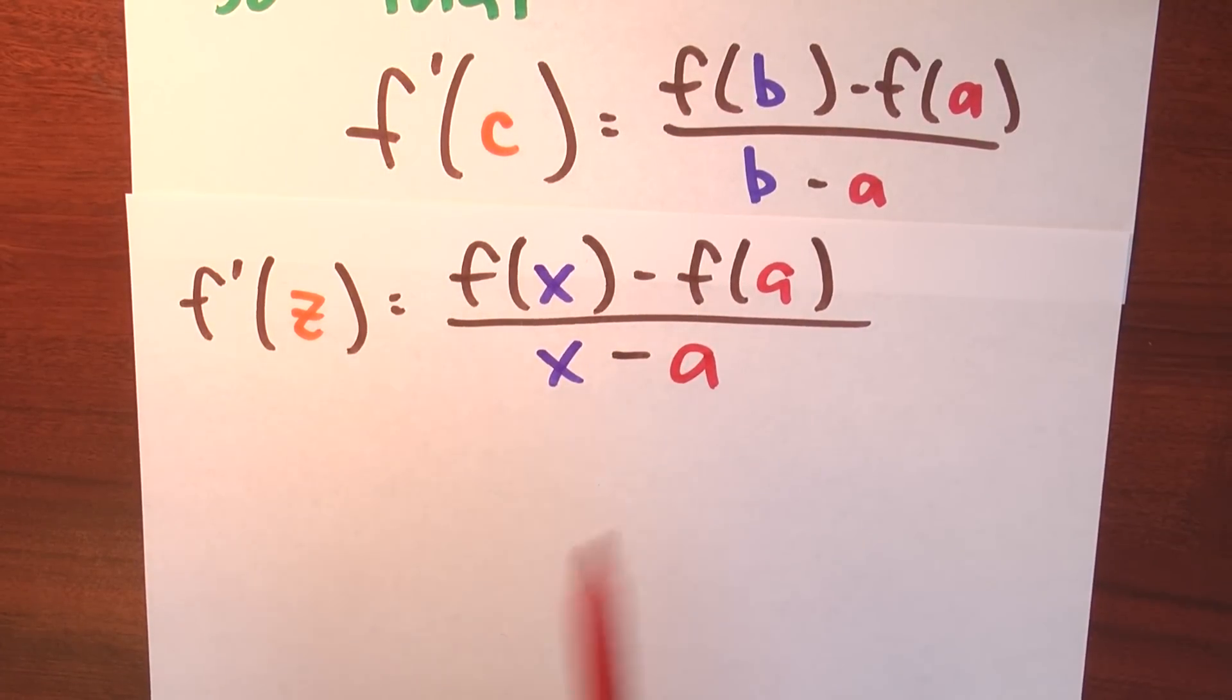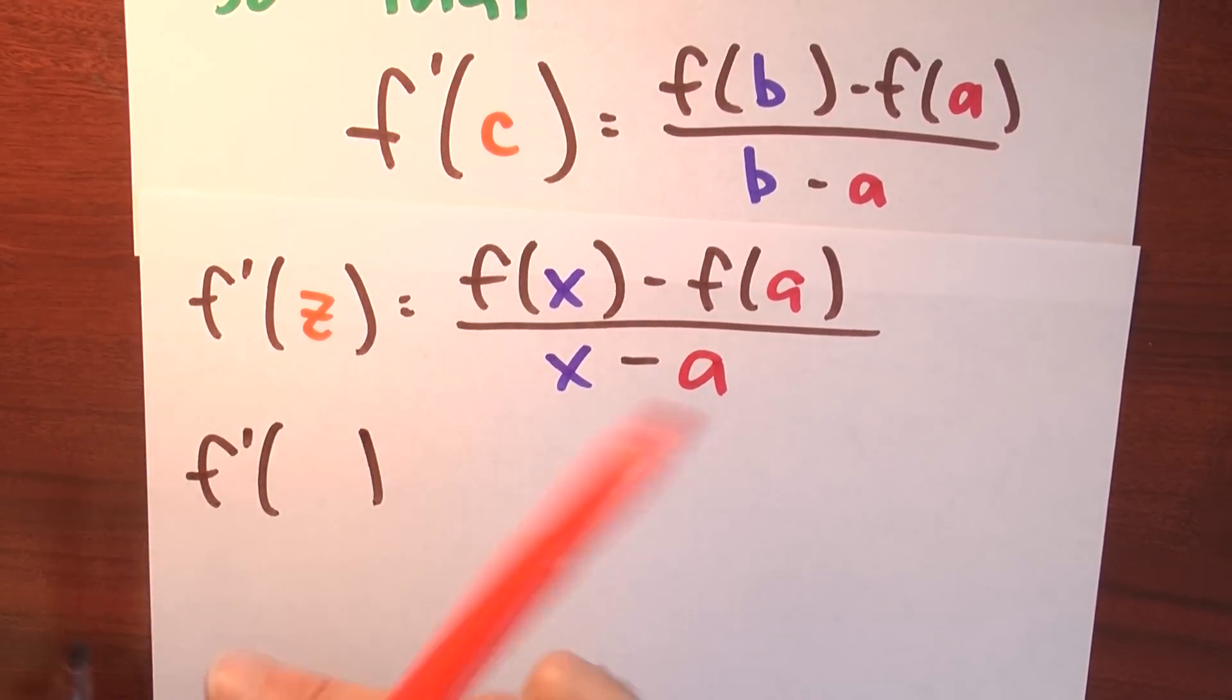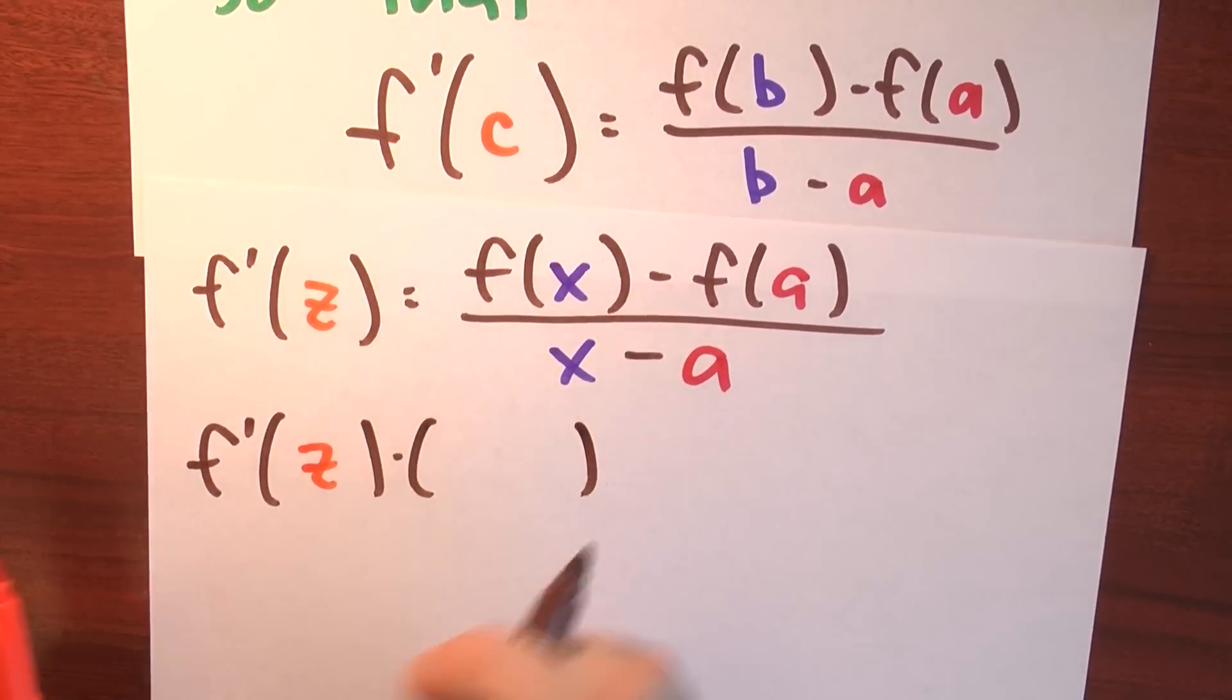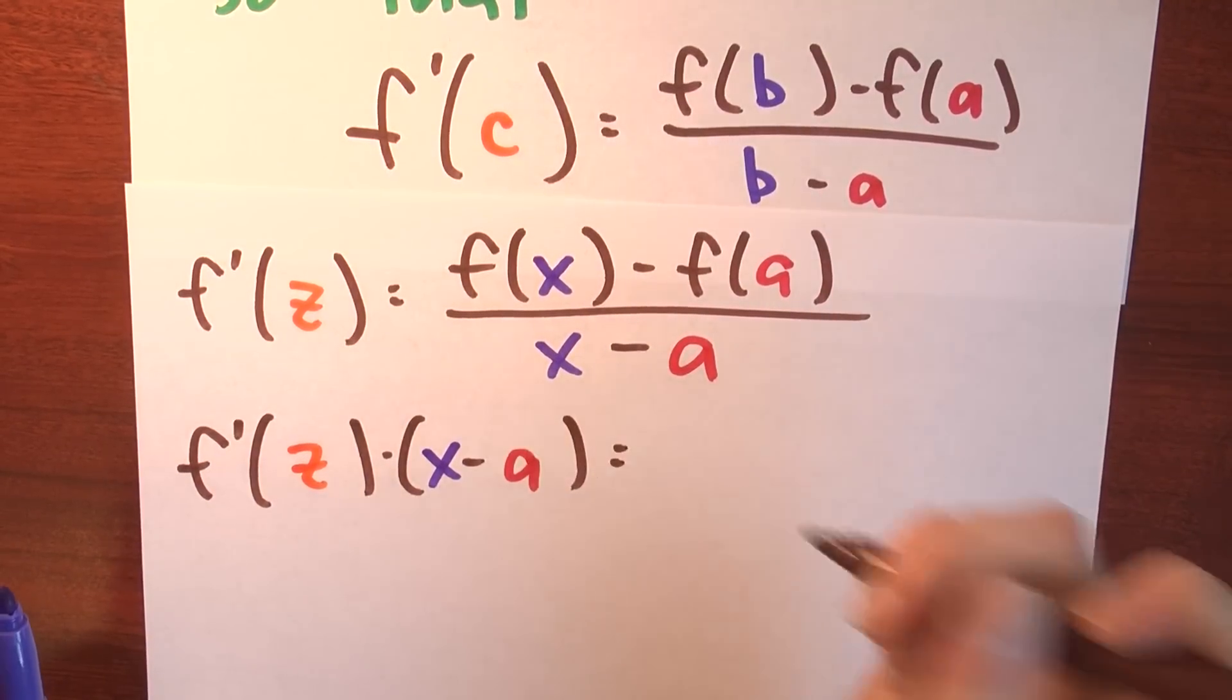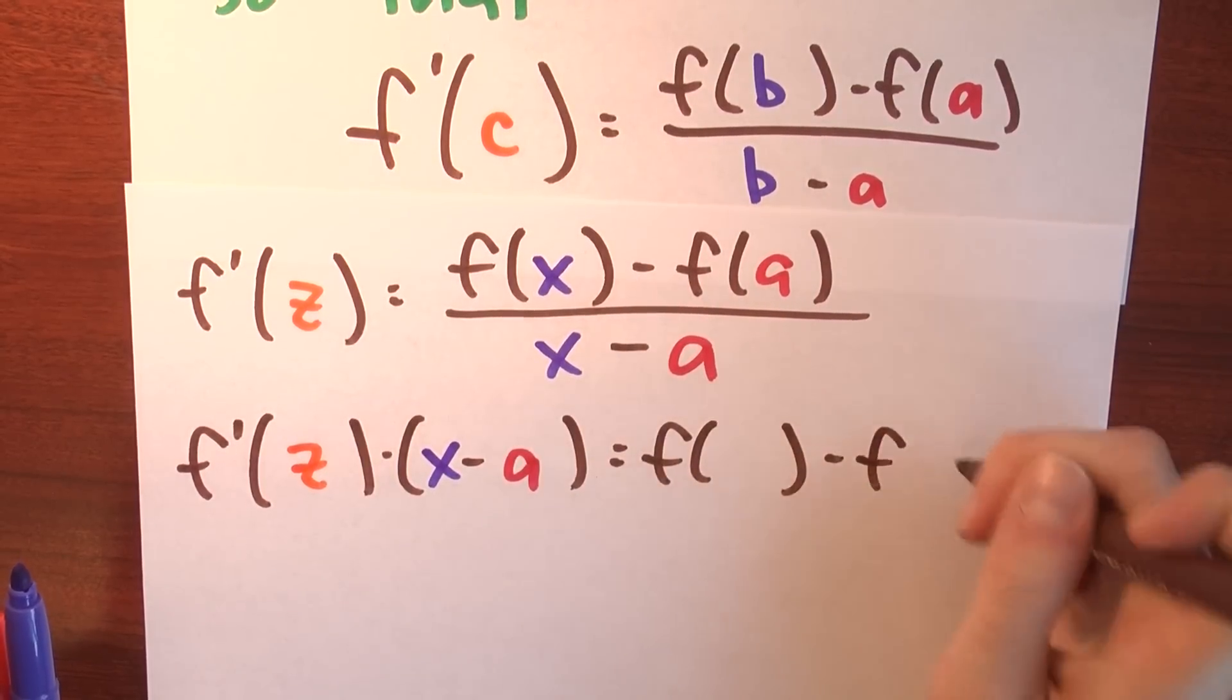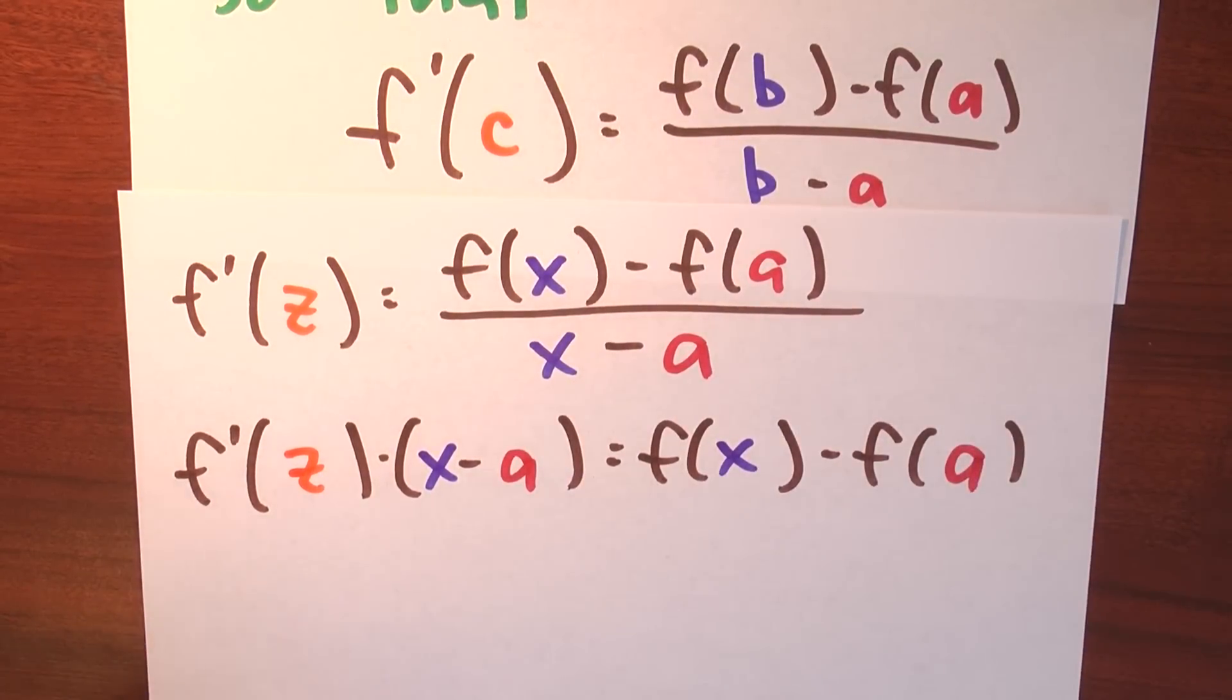Now I'm going to multiply both sides of this by the quantity x minus a. And what do I get? Well, I get f prime of z times the quantity x minus a. And that's equal to this numerator here, f of x minus f of a. So I'll put an x in there and an a in there.